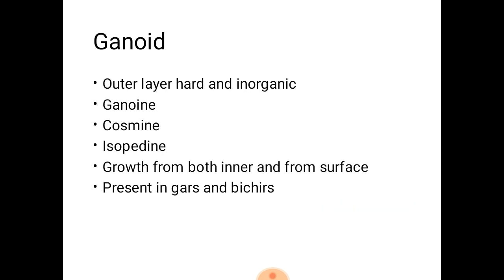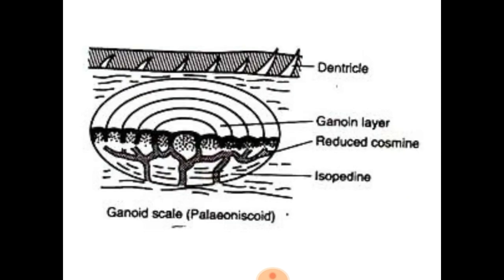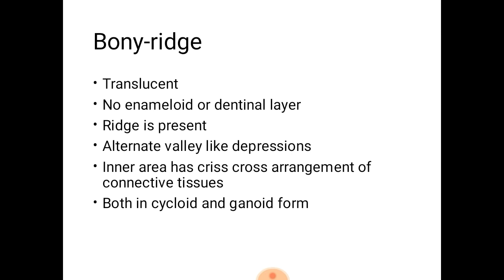The ganoid scale has a hard inorganic ganoid layer on the outside. Below the ganoid is a cosmin layer, and below the cosmin is the isopedine, which is the cellular portion containing blood vessels and nerves. Growth from both the inner surface and the outer surface can be observed. They are present in gars and bichirs. This is the diagram of the ganoid scale.